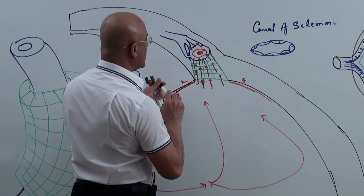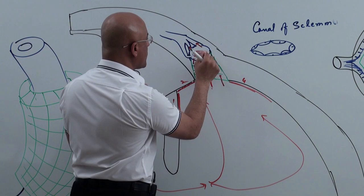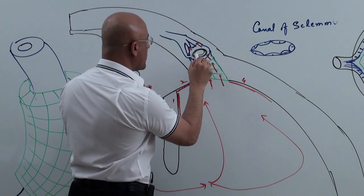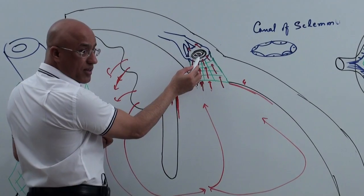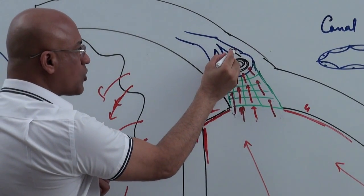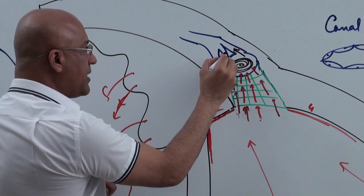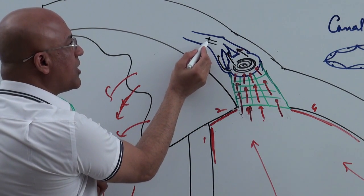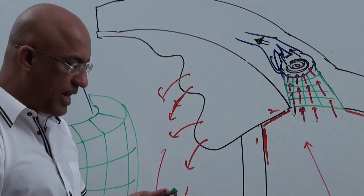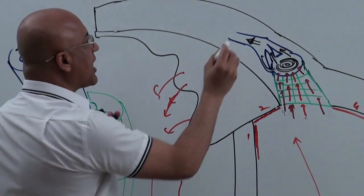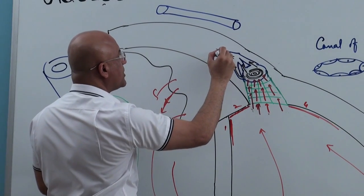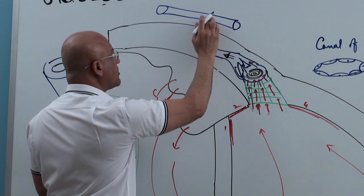If you know this much, that is enough. But if you really want to know more — from the canal of Schlemm, where does the fluid go? The canal of Schlemm has special draining channels called collector channels, or aqueous collector channels.